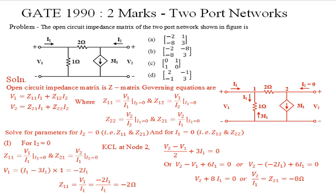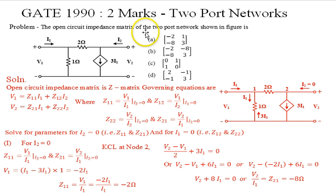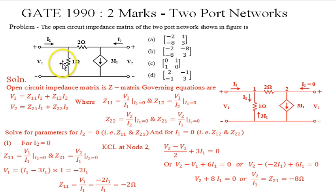We start with the first problem in this set, which is from GATE 1990. This is a two-mark problem on two-port networks, specifically on the impedance matrix or impedance parameters. The problem asks for the open circuit impedance matrix of the two-port network shown in the figure, with four options given. Port 1 and port 2 are identified with their corresponding circuit arrangements.